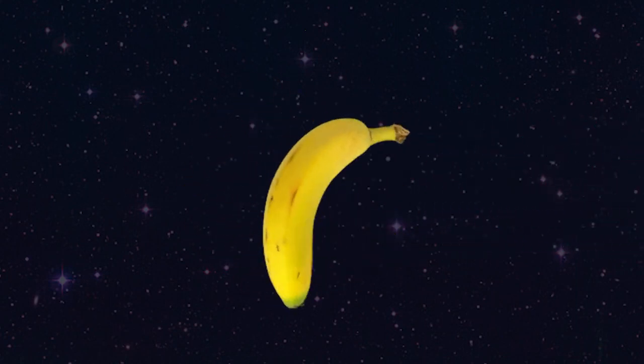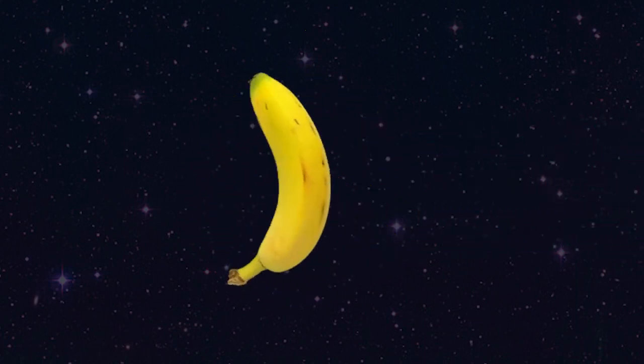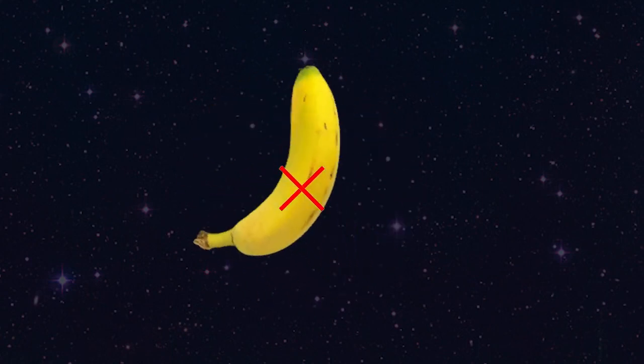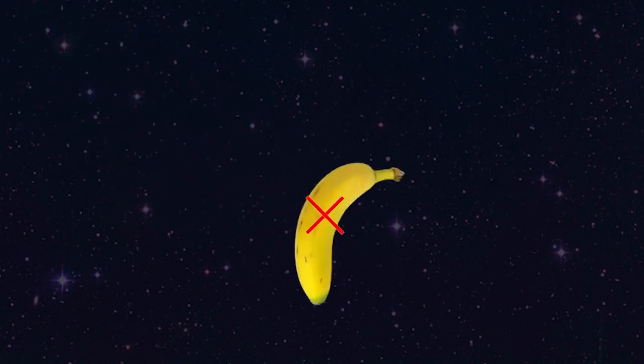So think about if there's a banana spinning in empty space. There's no force acting on it, so its center of mass won't be spinning. It would have to change its velocity to do that. Every other point on the banana will be spinning about the center of mass, which moves at some constant speed in a single direction.